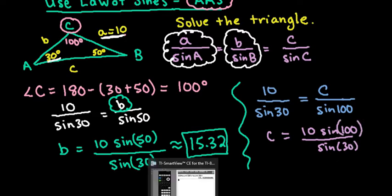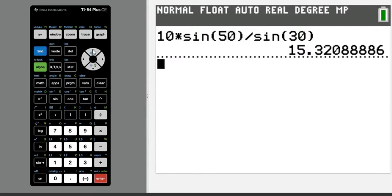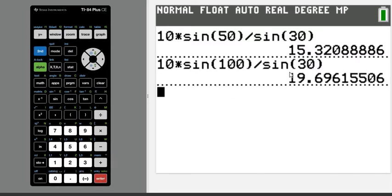So let's go back and grab our calculator. And for this one, if you wanted to, you could hit second enter so you don't have to retype everything. And I could just go and change this to 100. And I'm just going to insert, second delete will allow you to insert information in. And we get 19.696. So this would round up to 19.70.